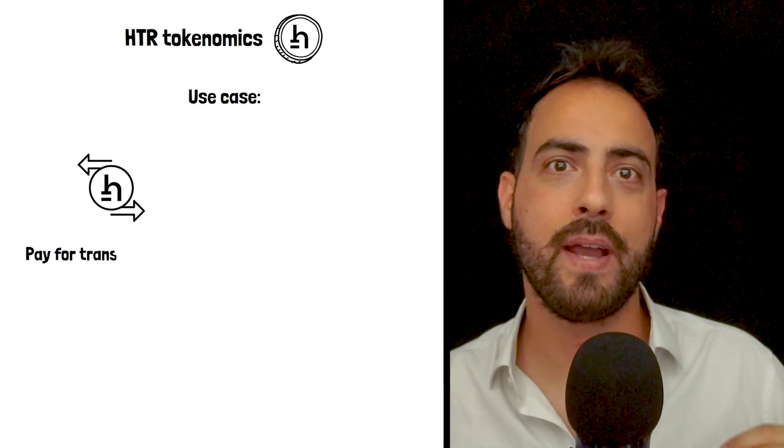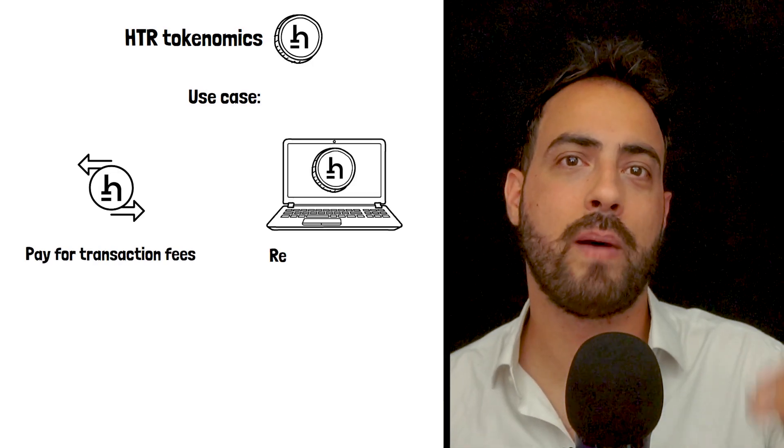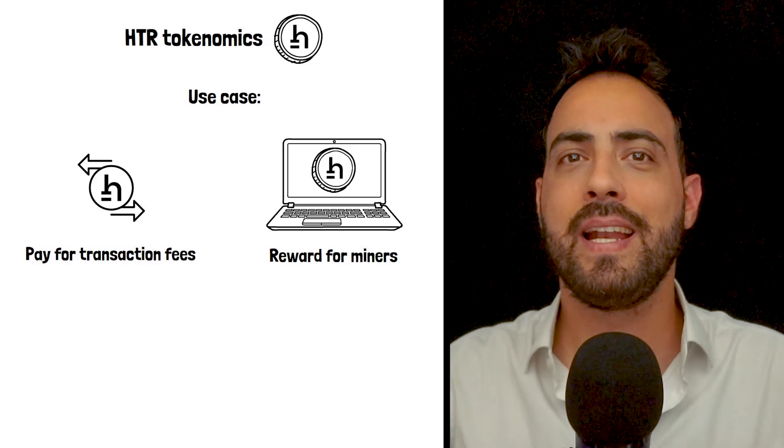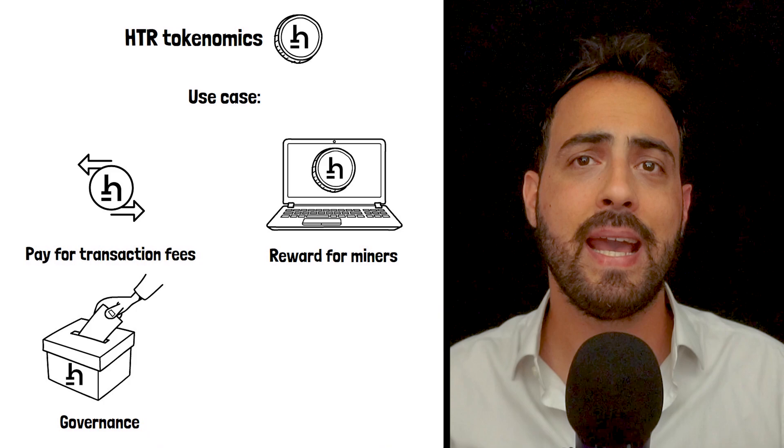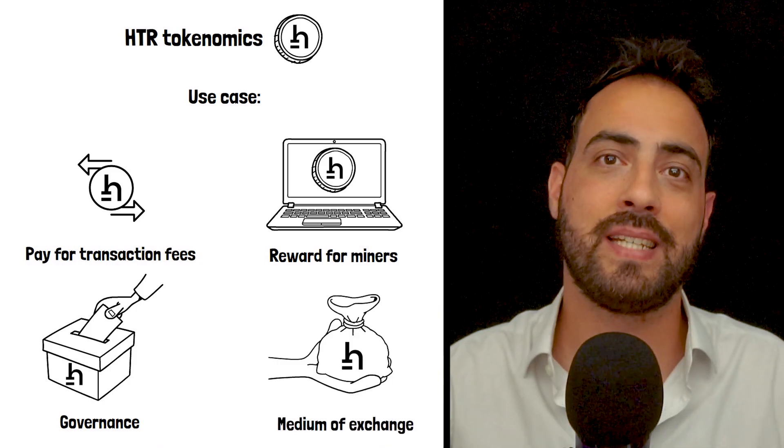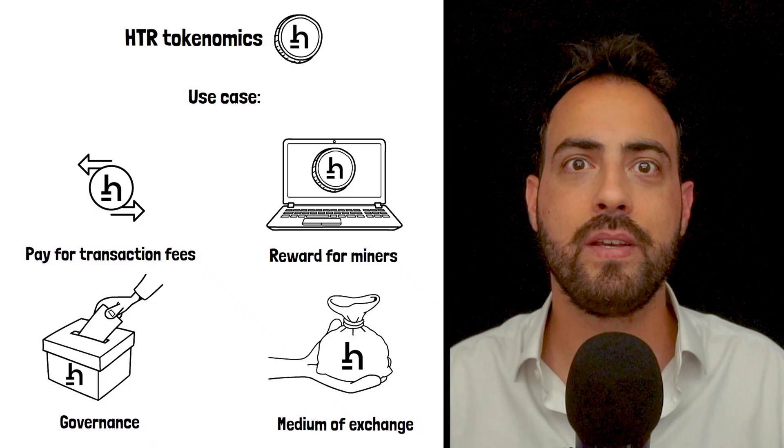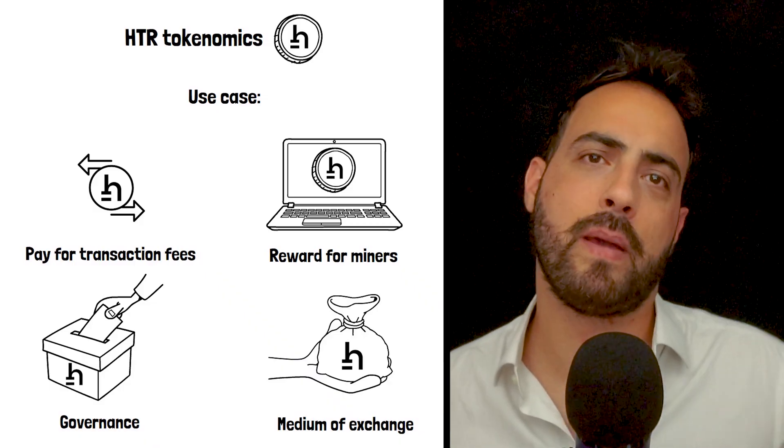HTR can be used to pay for transaction fees on the network when they are required, it serves as the reward for miners who secure the network, and is also used for governance decisions on the network. Beyond that, HTR is designed to be a medium of exchange. Its fast transaction times and low or zero fees make it suitable for everyday payments.